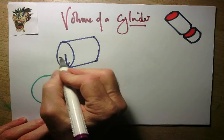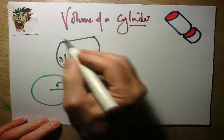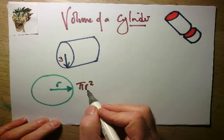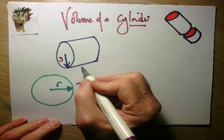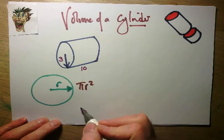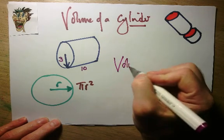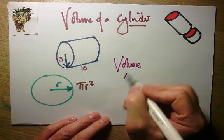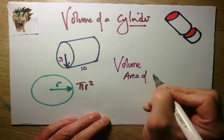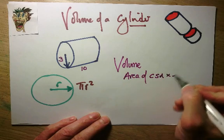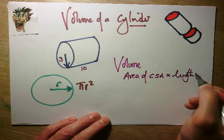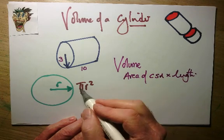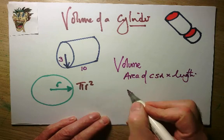So if I know that radius — call that 3 — then the area of that is going to be pi times 3 squared. I then multiply that by the length — call that 10 — and I get the volume. So all I need to do is find the area of the cross section and multiply it by the length. The area of the cross section is going to be pi times 3 squared.